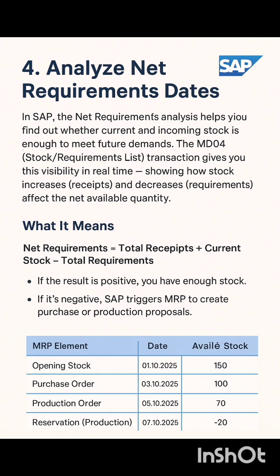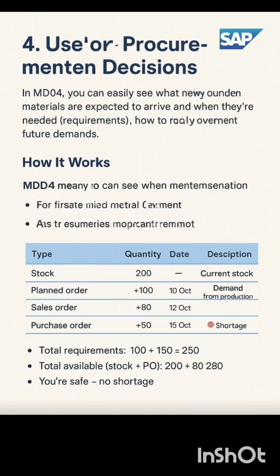MD04 can also help you make smarter purchasing decisions in SAP. MD04 gives procurement teams a live snapshot of stock, open demands, and incoming supplies — all in one screen. You can instantly check if available stock and purchase orders are enough to meet production or customer needs. If not, you know exactly when to raise a new purchase order or adjust supply delivery dates.